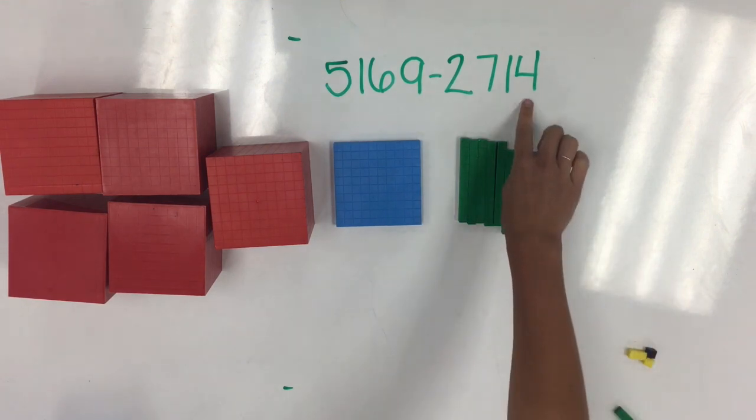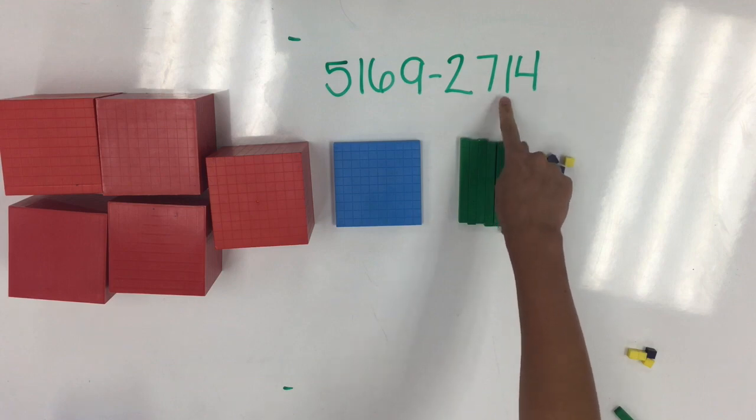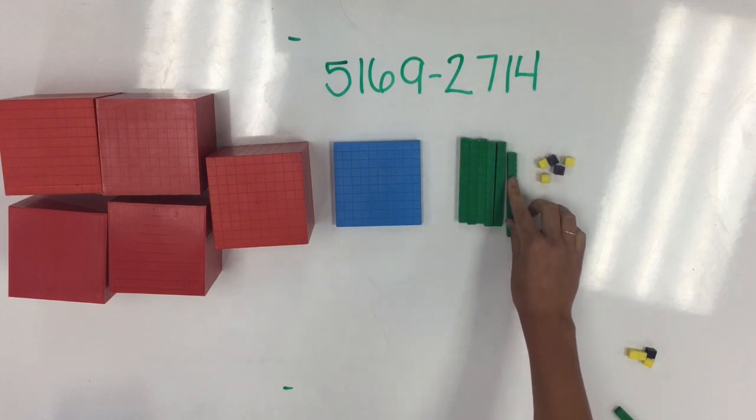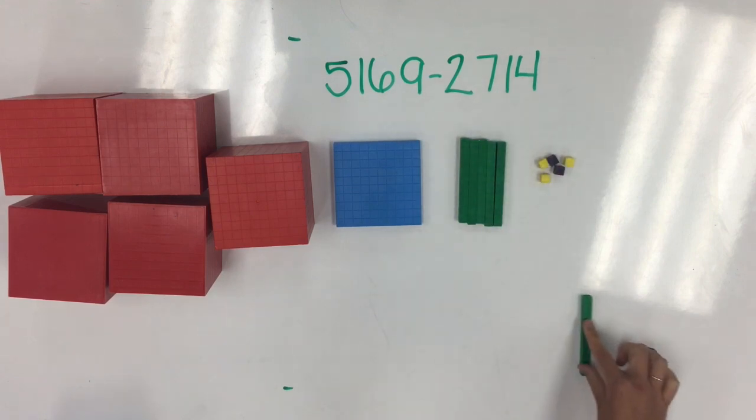Next, we move to our tens place, where we have a 1 that we're taking away. I can move out 1 group of 10.